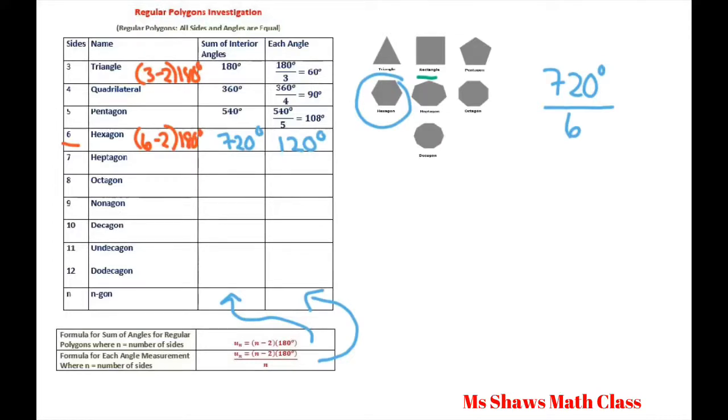If you want, we can do another one. Let's try the nine-sided. So we don't have the nine-sided here, but let's try it. The nine-sided would be written as 9 minus 2 times 180. So let's do that. It's going to be 7 times 180, which is 1260. And then all you do is divide that by 9 because there's nine angles.